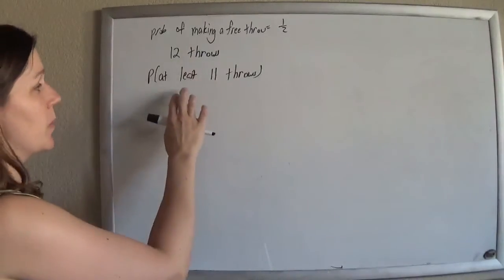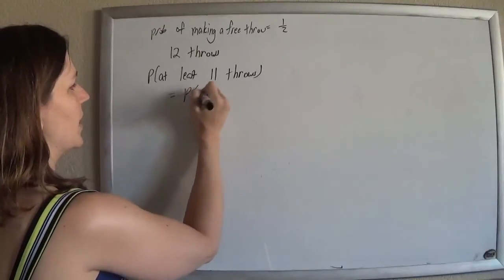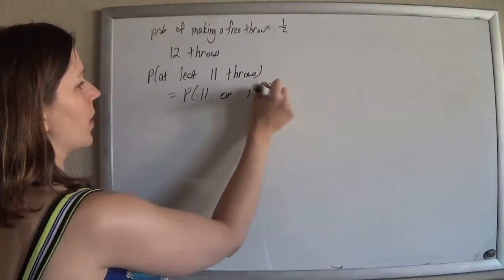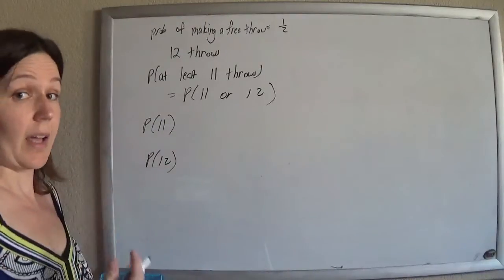Okay, so we're throwing 12 times, and we want to make at least 11 throws. So that means we want to make either 11 or 12 free throws. So we're going to find the probability of 11 and find the probability of 12 and add them up.